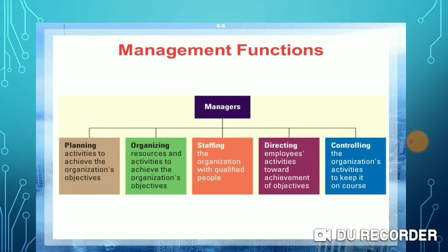Directing: Directing means to guide and supervise the employees for the accomplishment of objectives. Controlling: Controlling is the function of maintaining balance among effort, results, resources, and objectives. It is the last function of management. The function of controlling is to see whether all business activities are done according to plan or not. Controlling is a positive concept in modern times.